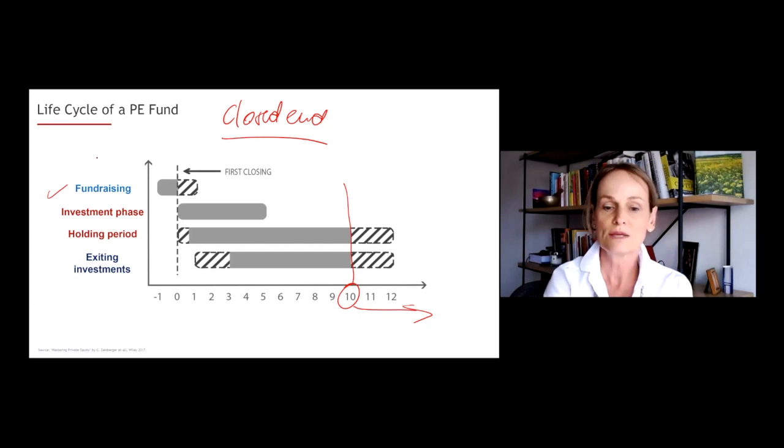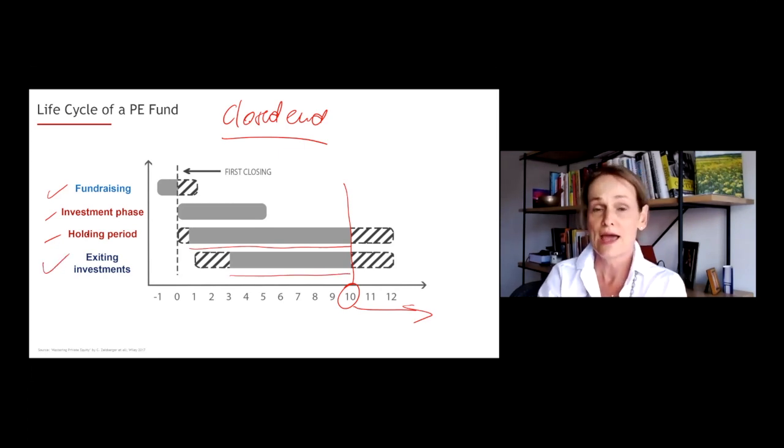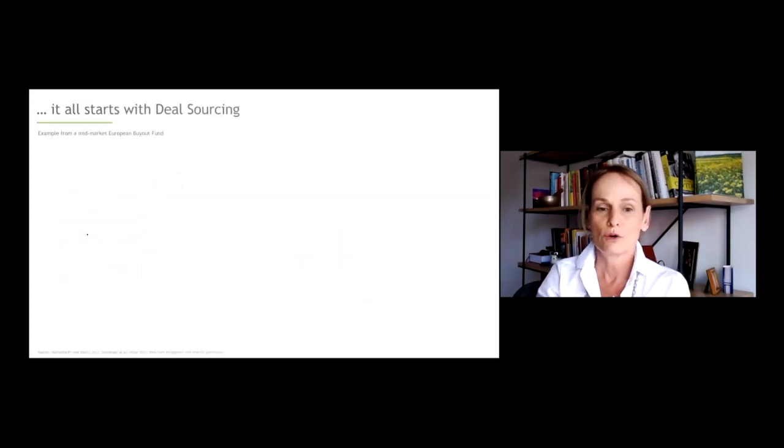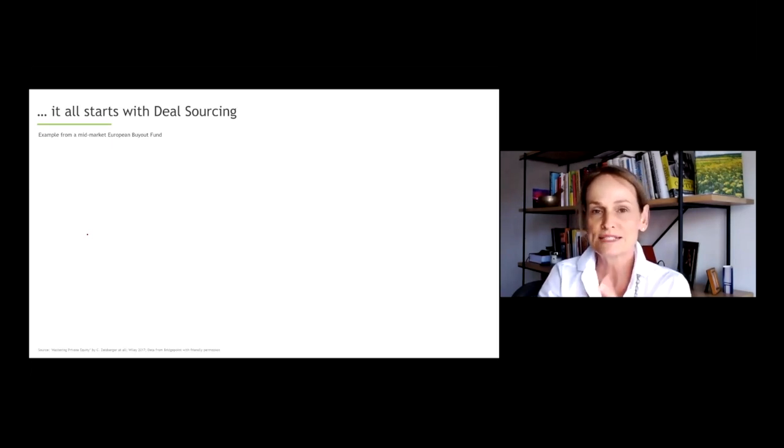we basically start with the investment period. That means we have a first closing, at which point the private equity firm can invest in private companies and start to deploy their funds. We then talk about the holding period, usually between five and nine years per portfolio company. And by year three or four, we usually will see the first investment, the first exits happen, meaning invested companies are being sold. Now, let's see what it starts with.